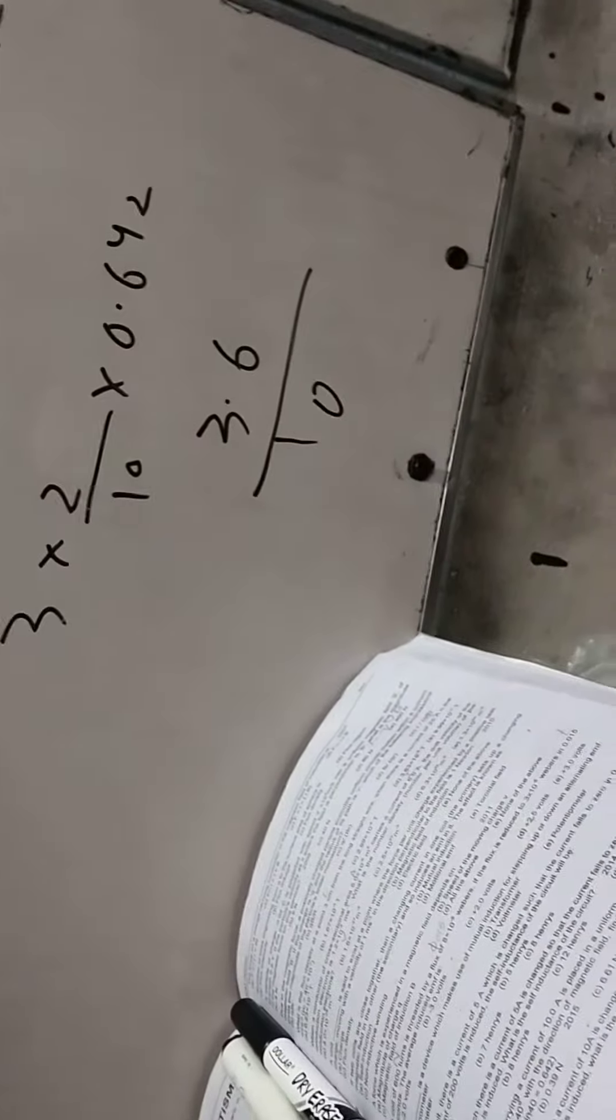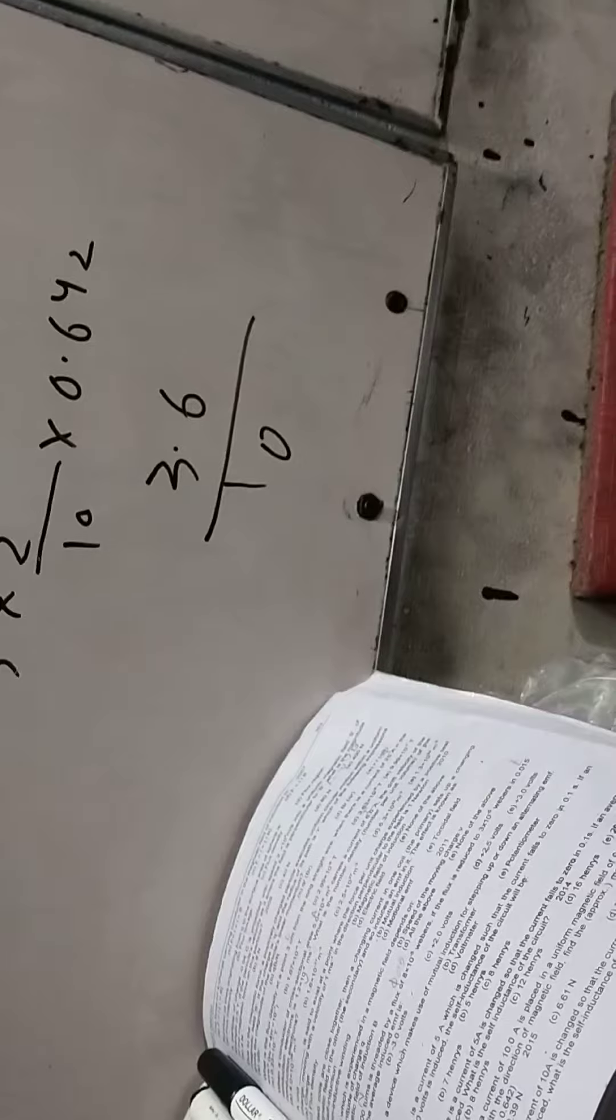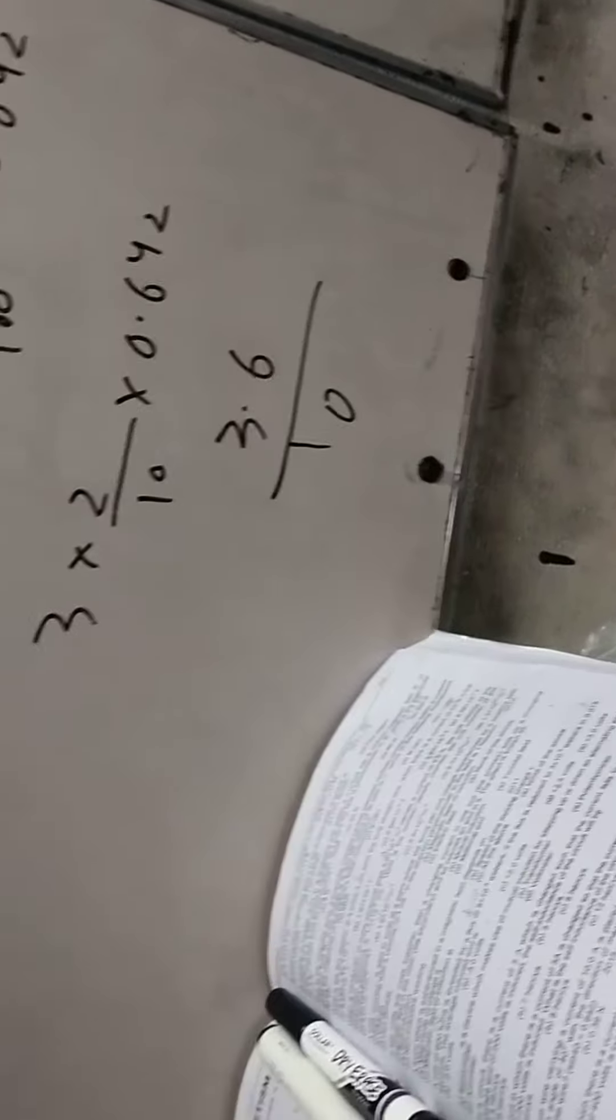Isse 10 se divide bhi karna hai toh answer jo yeh takriban 0.36, 0.37, 0.38, 0.39 ke aaspaas hona chahiye. Option mein dekhen, 2.71 ho nahi sakta, 0.39 bilkul 100 percent chance hai, yeh ho sakta hai.